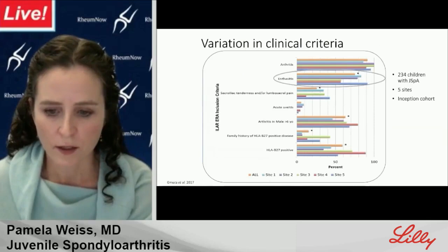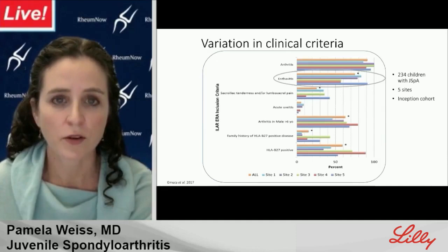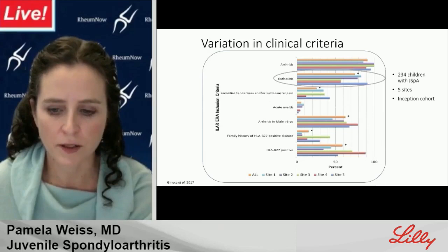A study including data on newly diagnosed patients with J-SPA from five centers spanning Europe and North America found that the prevalence of many disease characteristics — including back pain, arthritis, HLA-B27 positivity, and especially enthesitis — at diagnosis varies considerably across sites.